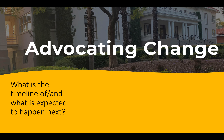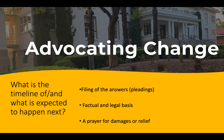Now we move to the timeline, or what is expected to happen after filing the cross-complaint. Once the defendant files the cross-complaint, both the plaintiff and defendant must then file their answers or other responses. These answers are called pleadings, and the pleadings must contain a factual and legal basis for the claim and a prayer for any damages or relief.